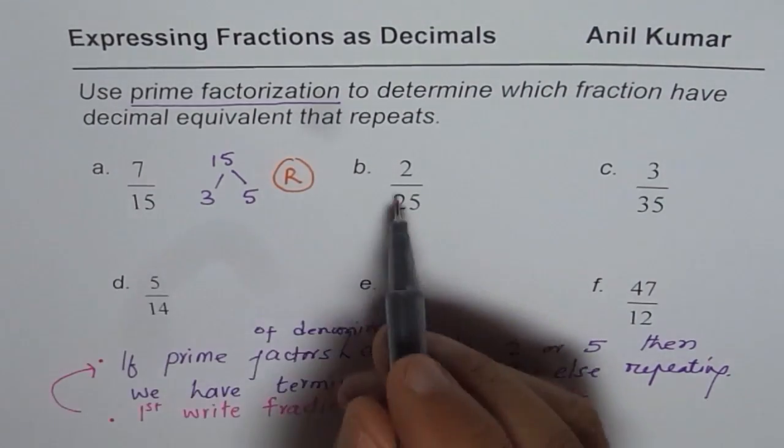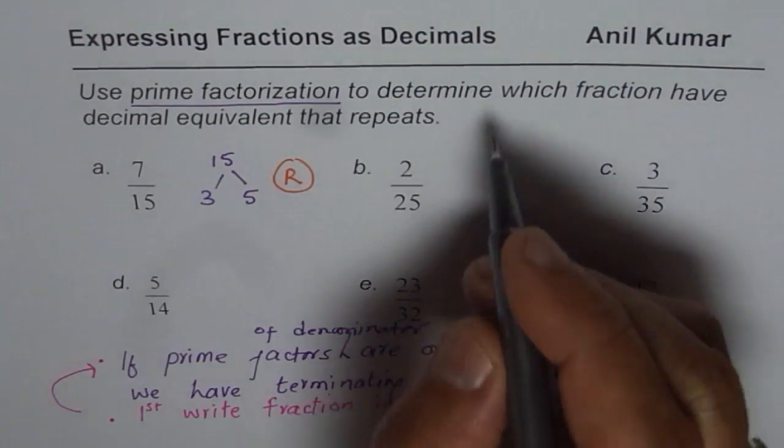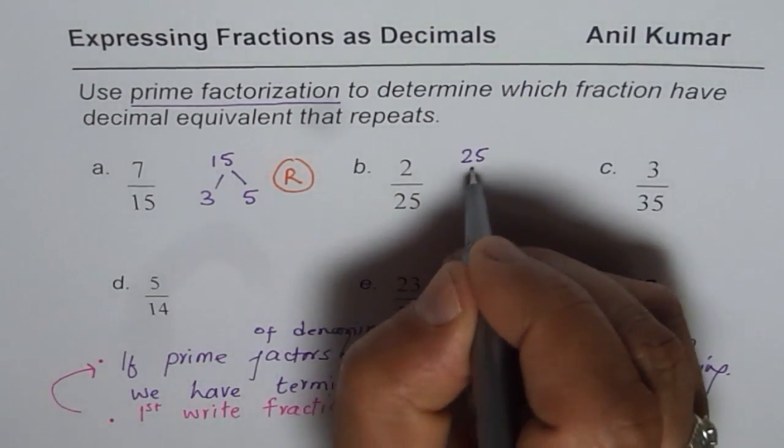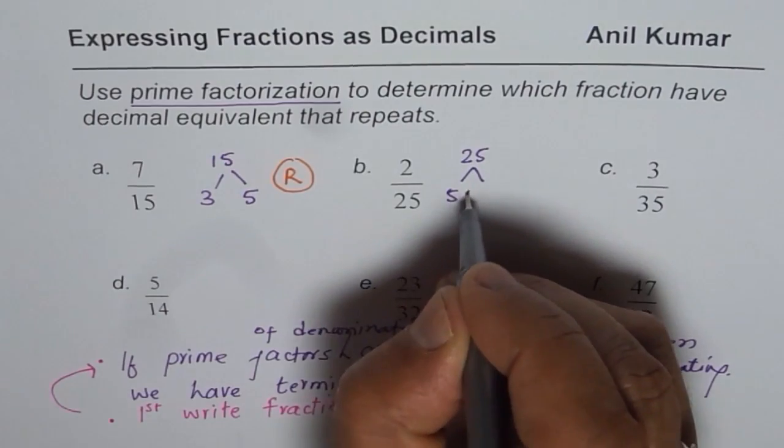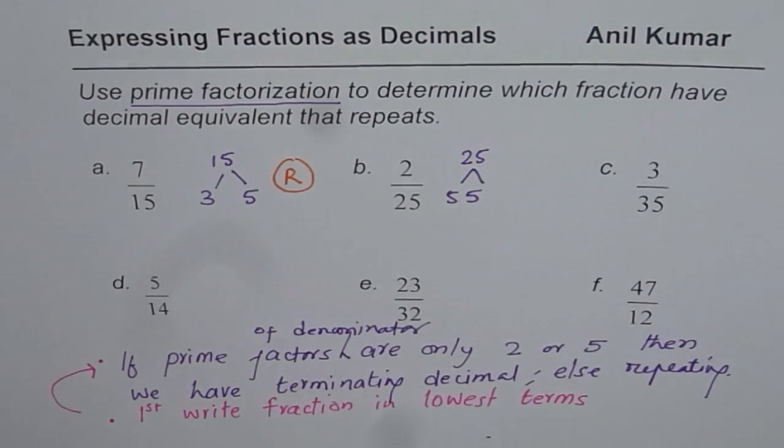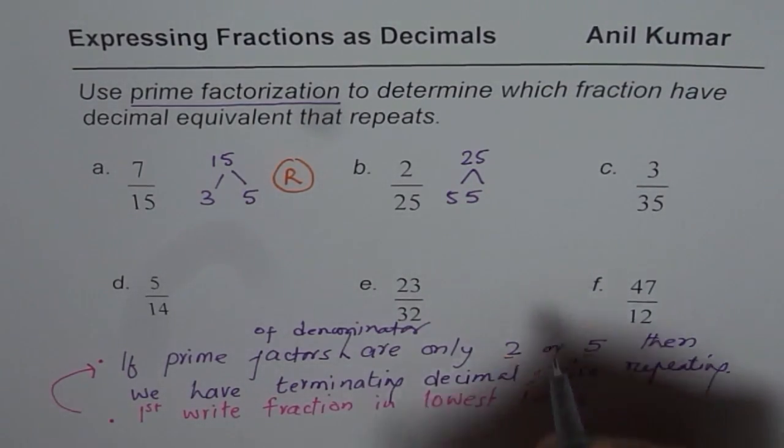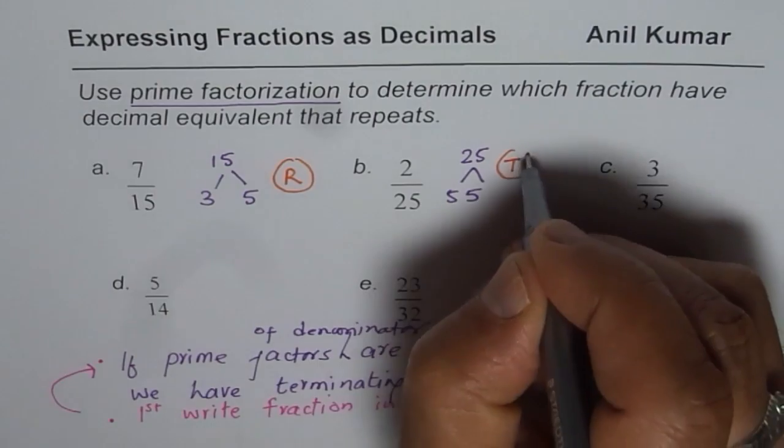Next one is 2 over 25. Let us find prime factors for 25, they are 5 and 5. So we have 2's or 5's, which is fine, so it is terminating, not repeating.